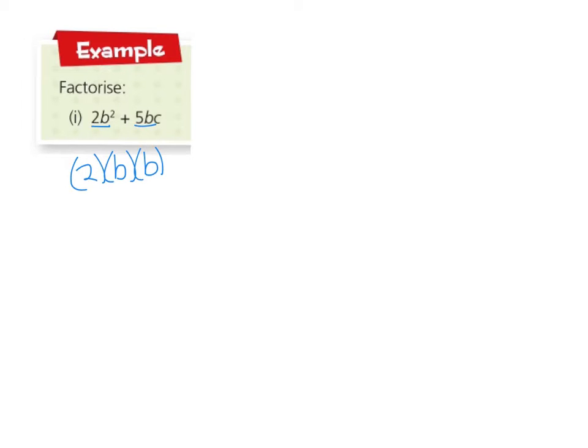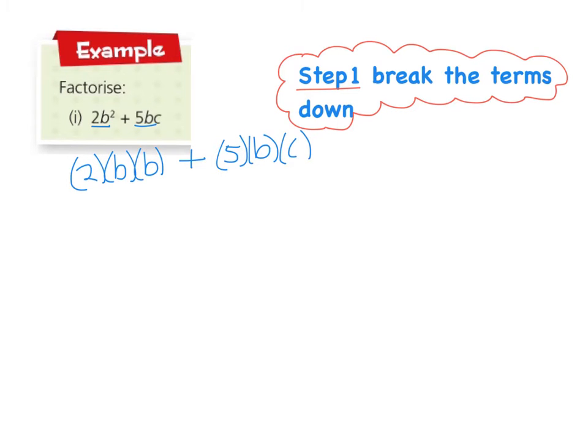The next one I have is plus 5bc, and again that's the same as writing plus 5 multiplied by b multiplied by c. Step one in factorising is to write out what each individual term actually stands for.